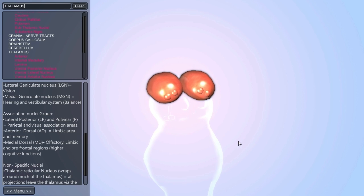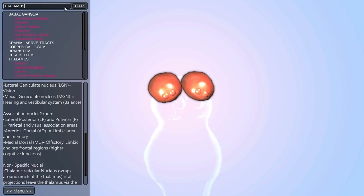The thalamus is divided into two thalami, one in each hemisphere.